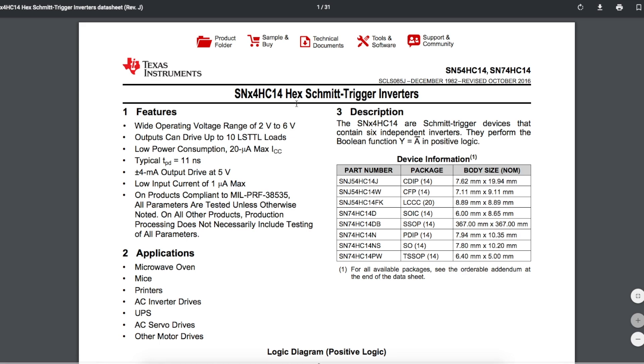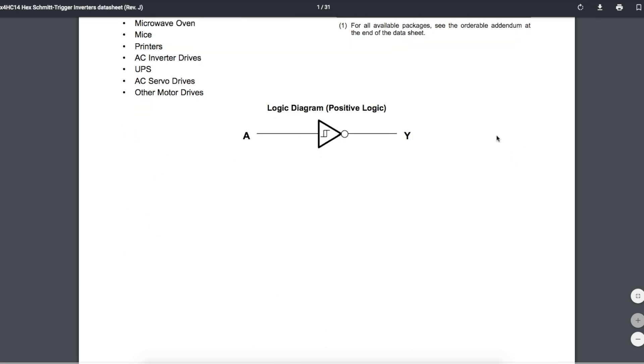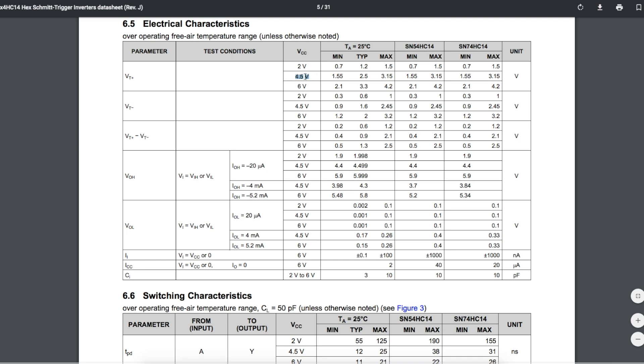If we look at a CMOS example and at the same time a Schmidt trigger example, we'll use the data for VCC 4.5 volts because it's closest to 5. So at close to 5 volts,